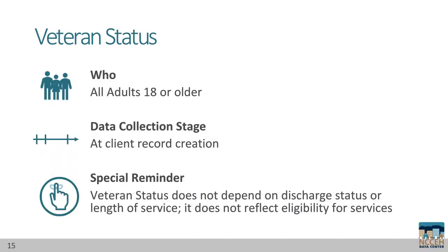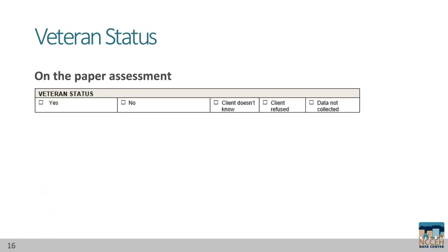Veteran status is required for all adults. Children under 18 cannot be veterans, so their response is no. This is one of the data elements collected for record creation and only collected once. One reminder: a client's status does not depend on their discharge status or length of service. For example, a client may identify as a veteran accurately without qualifying for VA-funded projects like SSVF. Here are the possible responses on the paper assessment. In HMIS, this element is listed on the client profile, so veteran status is on page 1 of the standard paper assessment.